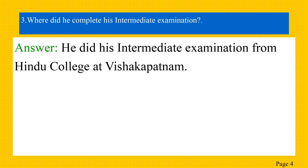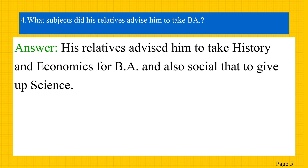The next question: where did he complete his intermediate examination? The answer is: he did his intermediate examination from Hindu College at Vishakhapatnam. Next question: what subjects did his relatives advise him to take for BA? Answer: his relatives advised him to take history and economics for BA, and also advised him to give up science.